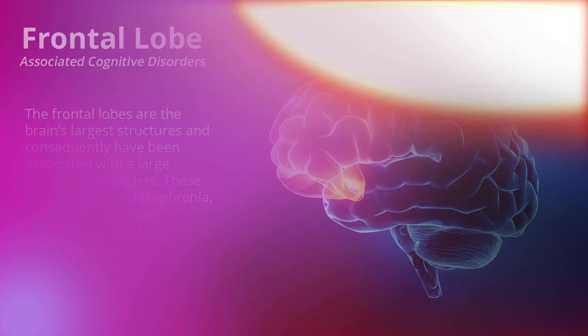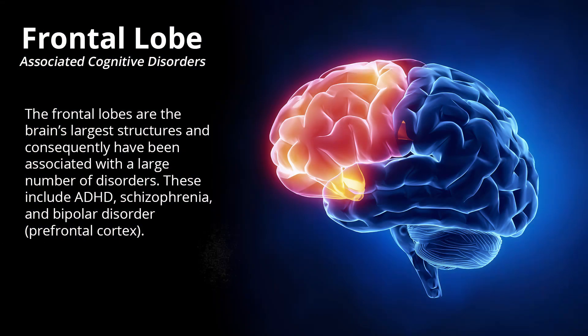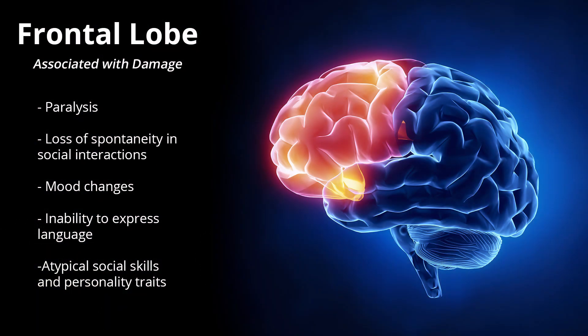The frontal lobes are the brain's largest structures and consequently have been associated with a large number of disorders. These include ADHD, schizophrenia, and bipolar disorder. Conditions associated with damage to the frontal lobe include paralysis, loss of spontaneity and social interactions, mood changes, an inability to express language, and atypical social skills and personality traits.